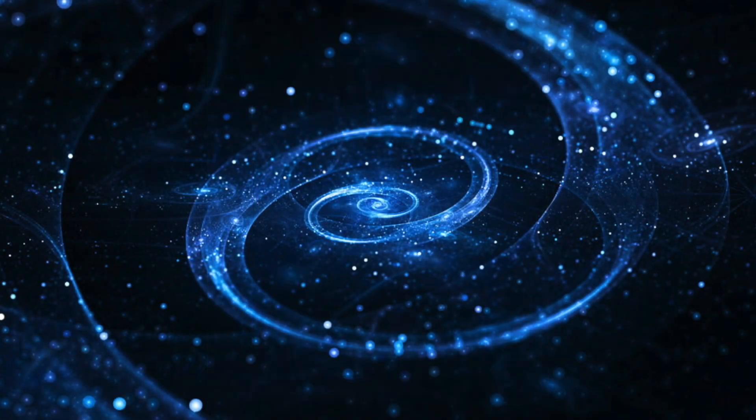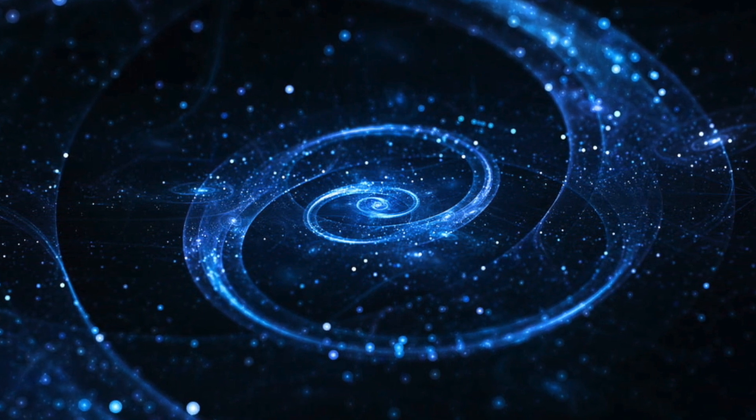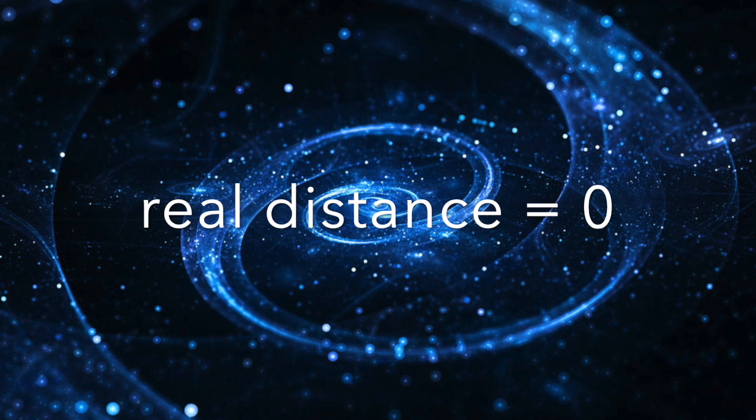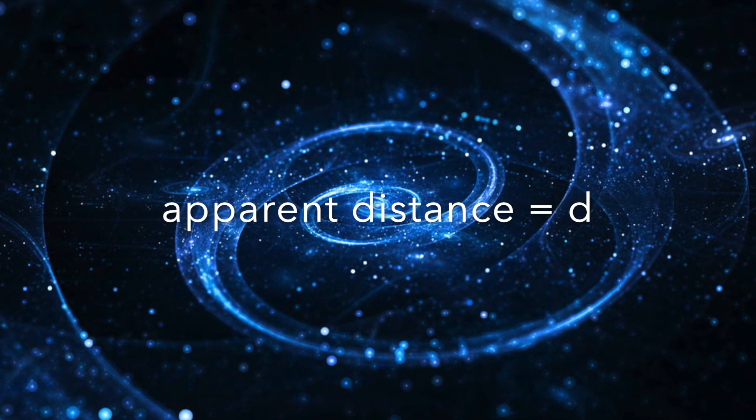What then is the distance travelled by P? It can be interpreted in two ways. Real distance equals 0 because there is no real motion. Apparent distance equals small d.